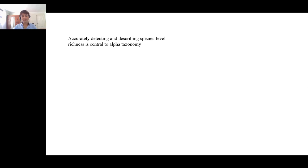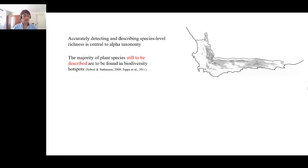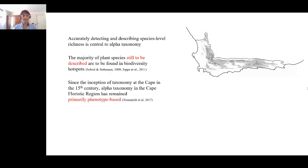I thought I'd begin with first principles — understanding how species have been described in the Cape. The Cape is my system of interest; I work on a small group of daisies. Accurately describing species is central to alpha taxonomy: we need to know what things are before we can conserve or research them further. We know that most plant species still to be described will probably be found in biodiversity hotspots like the Cape Floristic Region, the smallest and richest hotspot in the world. Since the inception of taxonomy in the 15th century, taxonomy has been primarily based on morphology — using observable attributes to define the populations that together constitute species — and that's still how we describe most species today.